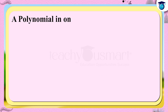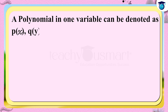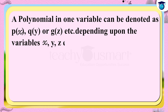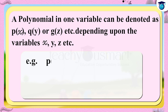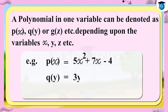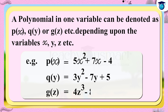Usually, a polynomial in one variable can be denoted as p(x), q(y), or g(z), etc., depending upon the variables x, y, z, etc. For example: p(x) equals 5x squared plus 7x minus 4; q(y) equals 3y squared minus 7y plus 5; g(z) equals 4z cubed minus 8z squared plus 5z plus 4.